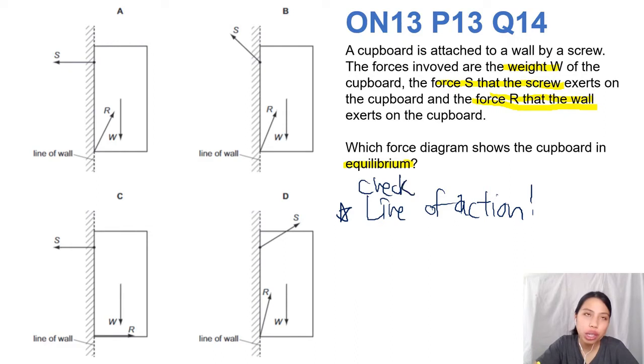If we use the shortcut or trick from the previous question, we can check the line of action of each force and see if they intersect at one point, meaning the torque about that point is zero. Let's try that shortcut. Looking at option A, the line of action is along this line, W is down, R is kind of like that. The lines of action don't really cross anywhere, so you can't really choose a point and say the torque about that is zero.